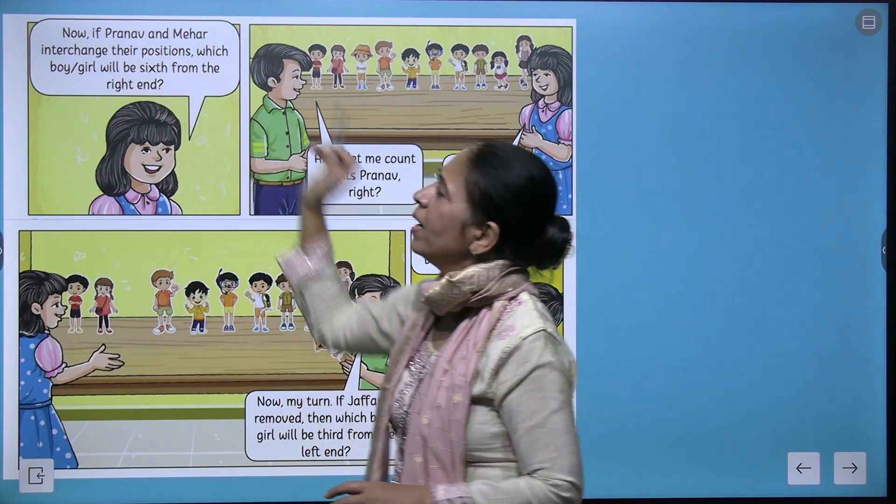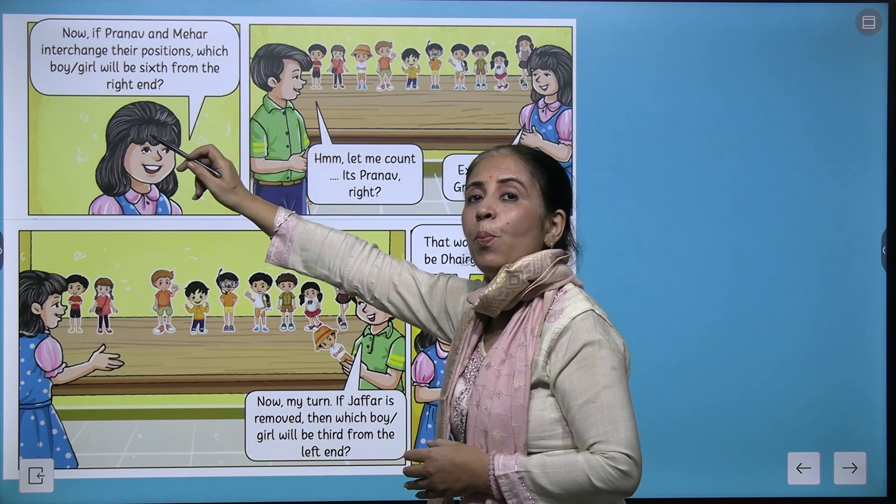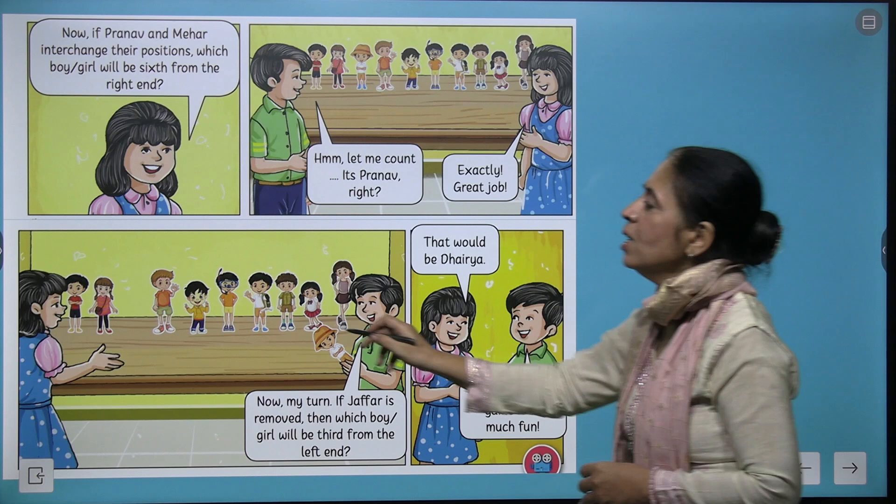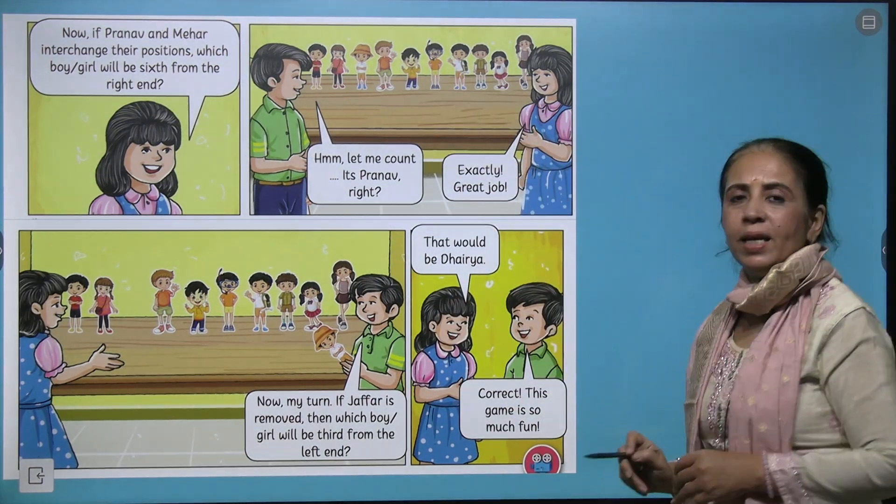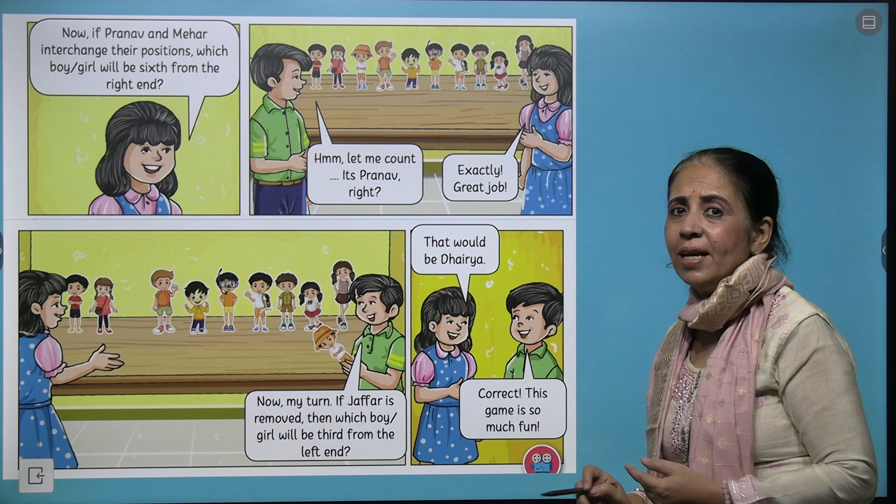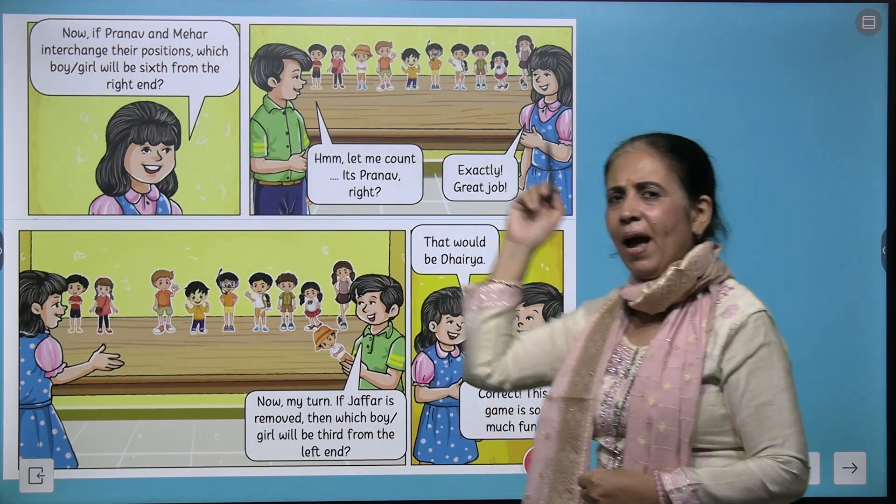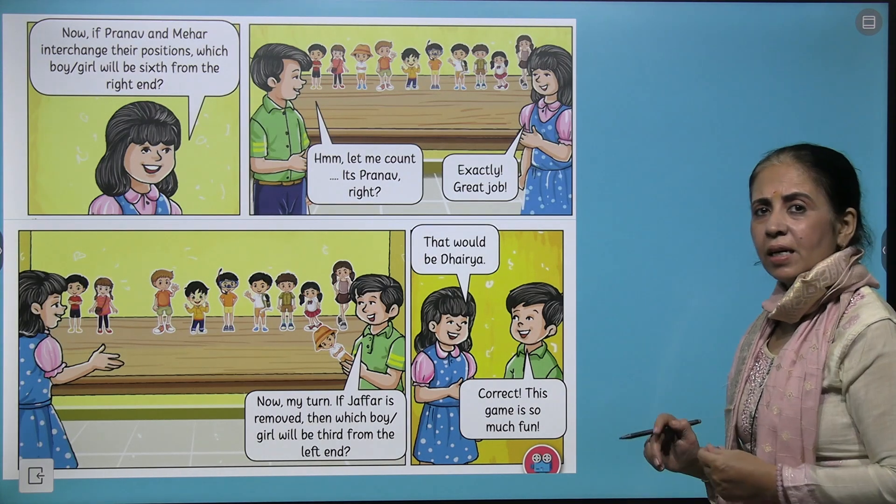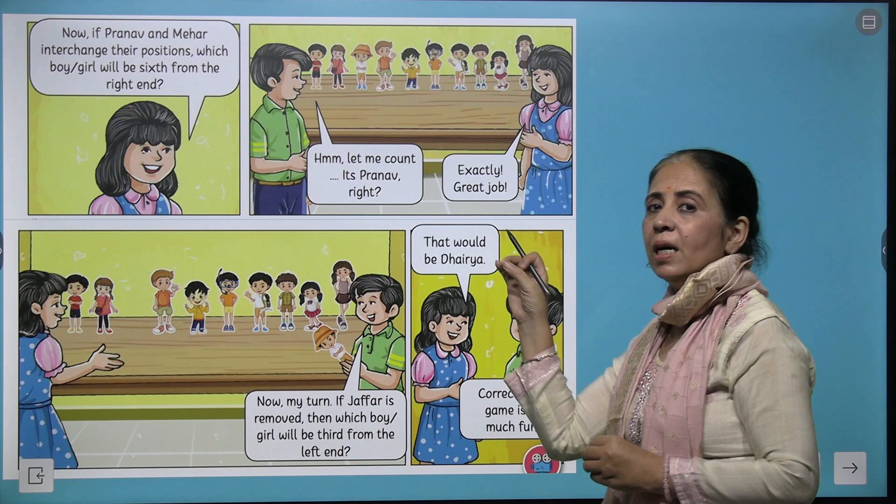Ria asks the question: if Pranav and Mihir interchange their position, which boy or girl will take sixth position from the right side? So here the replacement is done, and from the right when he started counting, he said it's Pranav. He shouts out for Pranav and that was absolutely correct.